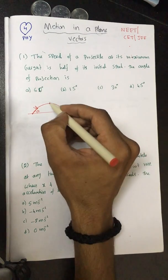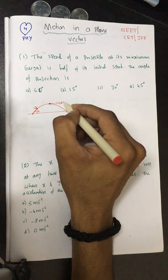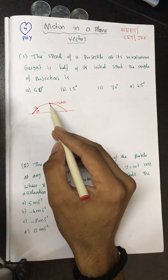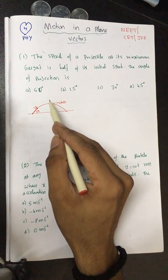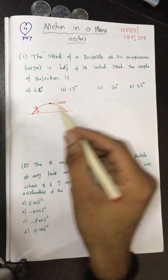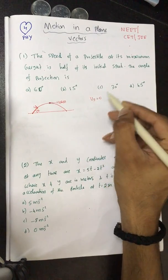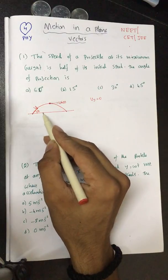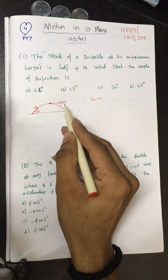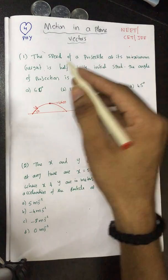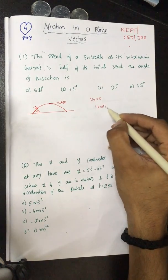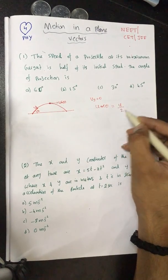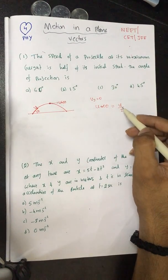At the maximum point, the speed is actually u cos theta. For projectile motion, there is only the horizontal component at the maximum point. The vertical component of velocity is zero, so vy = 0. The horizontal component remains the same throughout the motion, so at the maximum point the velocity is u cos theta. They say that u cos theta equals half the initial speed, which is u/2.